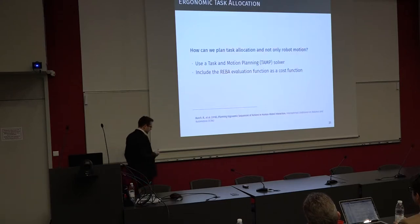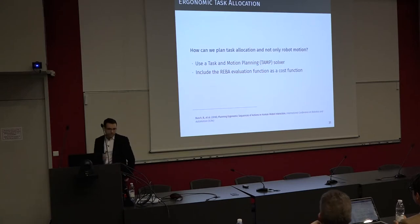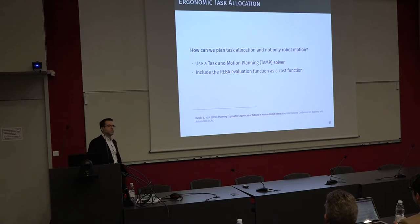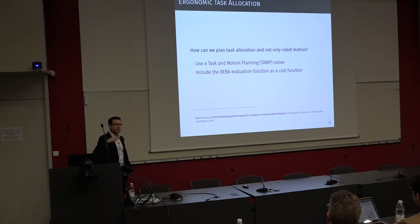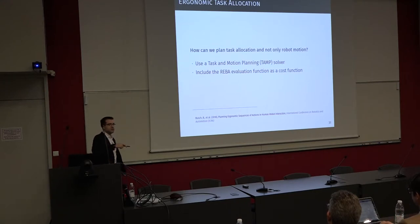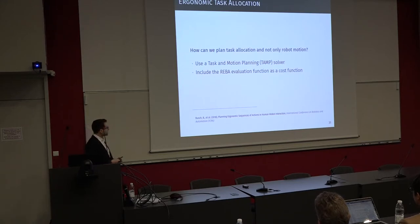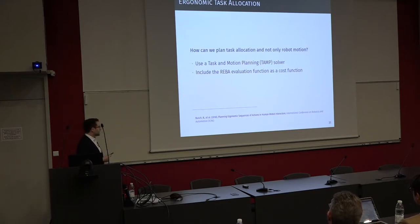Now, can we go deeper? Instead of only planning motions for one action, can we plan sequences of actions? For example, maybe it is better to insert first the triangle, then the circle, then the star. How can we optimize entire sequences of actions rather than only individual motions? For that, we considered using a Task and Motion Planning (TAMP) solver and included the REBA evaluation function as a cost function in that solver.